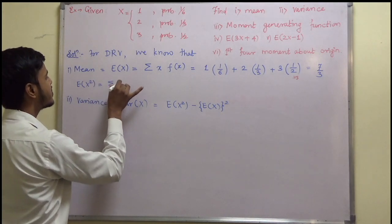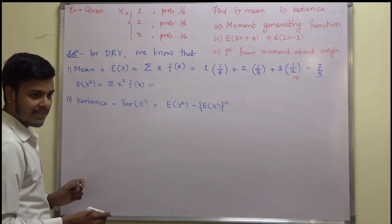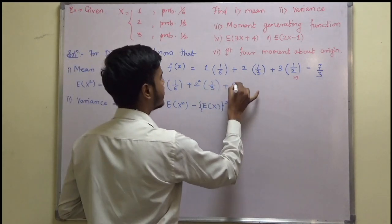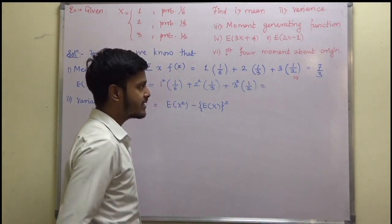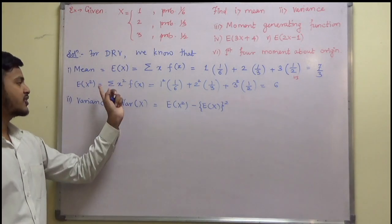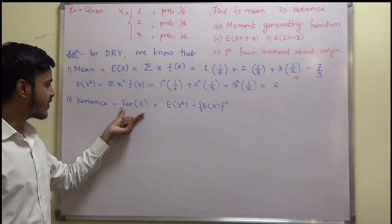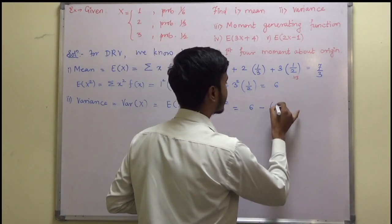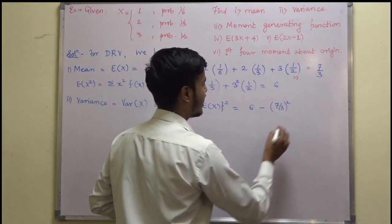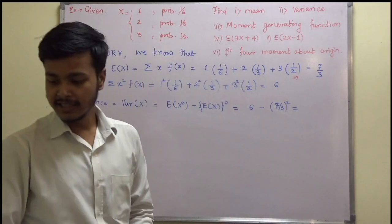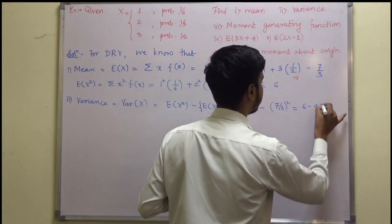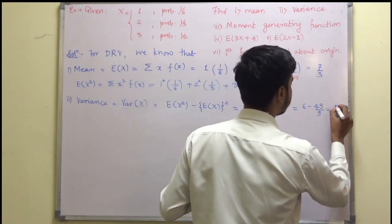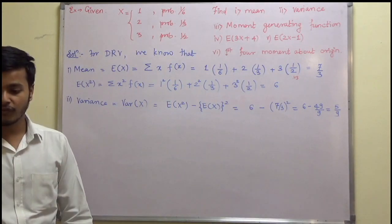E(X²) = summation x²·f(x) = 1² × 1/6 + 2² × 1/3 + 3² × 1/2, which comes out to be 6. So variance of X = E(X²) − [E(X)]² = 6 − (7/3)² = 6 − 49/9 = 54/9 − 49/9 = 5/9. So we have the value of variance as 5/9.